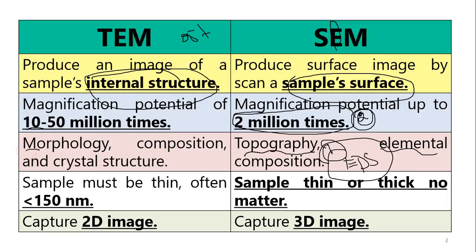Similarly, TEM also gives us information about the morphology, the composition, and the crystal structure. Crystal structure is an internal property — whether the material is polycrystalline or single crystal (monocrystal). Using the selected area electron diffraction (SAED) pattern: if we get a dot pattern, it means it is a single crystal; if we get rings, it is fully polycrystalline.